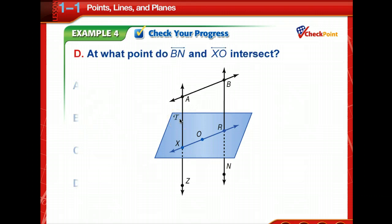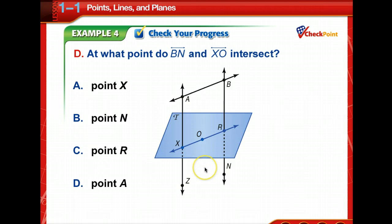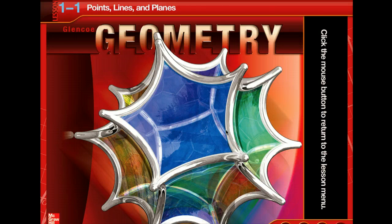Okay. Final one. At what point do line B, N, and line X, O intercept? Line B, N, and X, O. At what point do they intersect? Yes, at point R. Very good job. Okay. You guys are ready to begin the exercises.